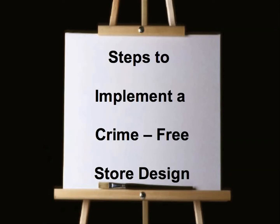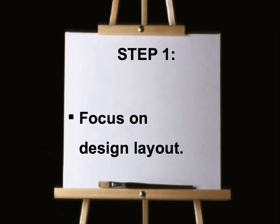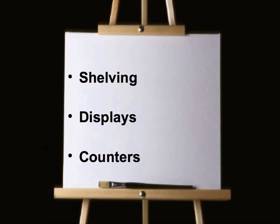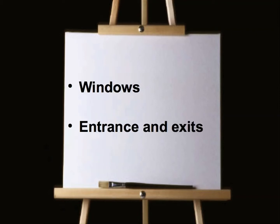Steps to implement a crime-free store design. Step 1: Focus on design layout. Assess the physical aspects of the store to determine which areas are the most vulnerable. Pay particular attention to shelving, displays, counters, windows, and entrance and exit points.